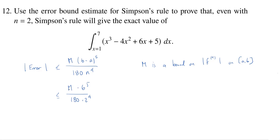But let's compute this m. So m is a bound on the absolute value of the fourth derivative. So if this is our function f, what is the fourth derivative? Well, the first derivative is going to be 3x squared minus 8x plus 6. And the second derivative is going to be 6x minus 8. The third derivative is 6.